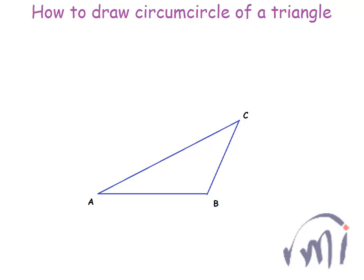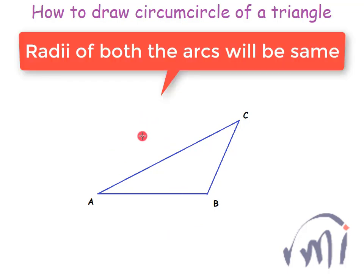So to draw the perpendicular bisector I have to keep the tip of the compass over here and draw an arc over here, and then I'll keep the tip of the compass over here and draw an arc over here.